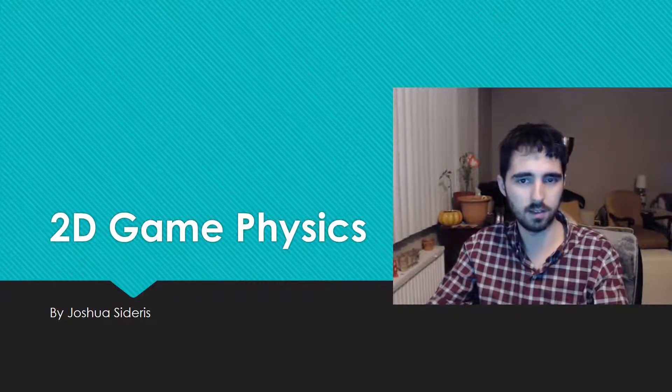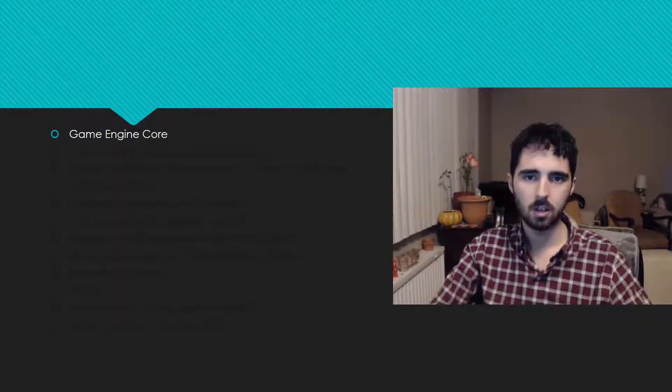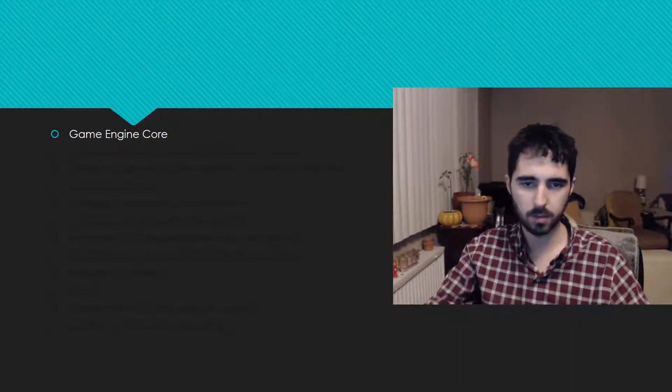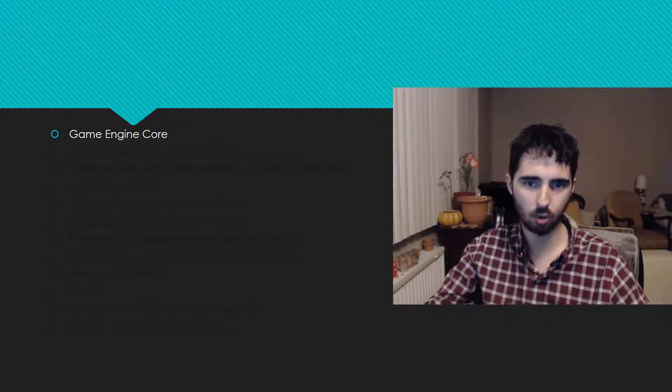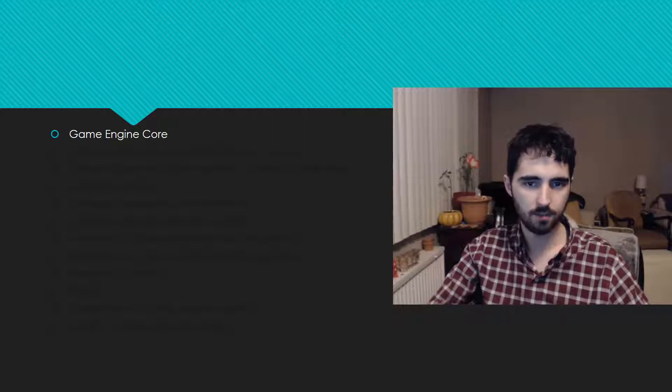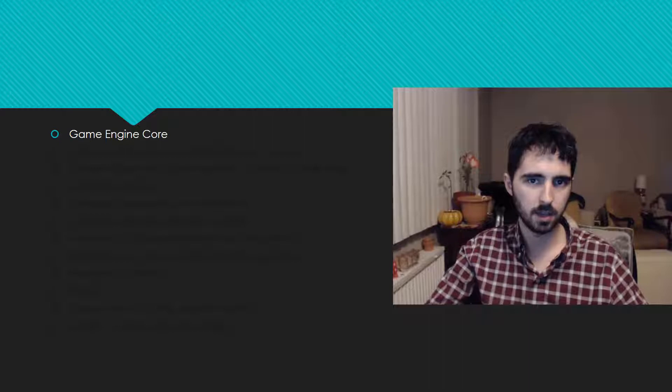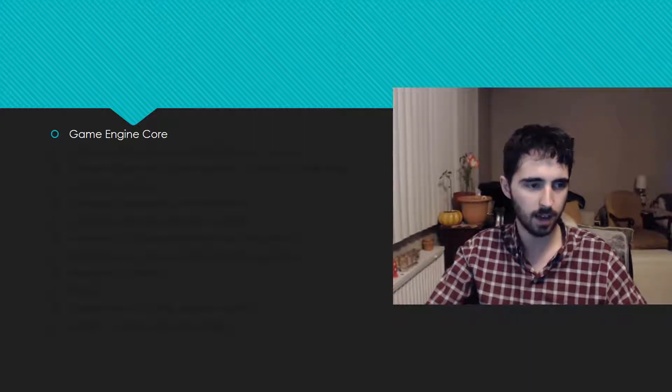All right, let's talk about what the upcoming videos for this series are. First, I'm going to give some introductory material on how to build a basic game engine core. This is something that every game developer should know. If you're building a physics-based game, you need to have a game loop that runs, updates the physics, updates the graphics, renders, and so on.